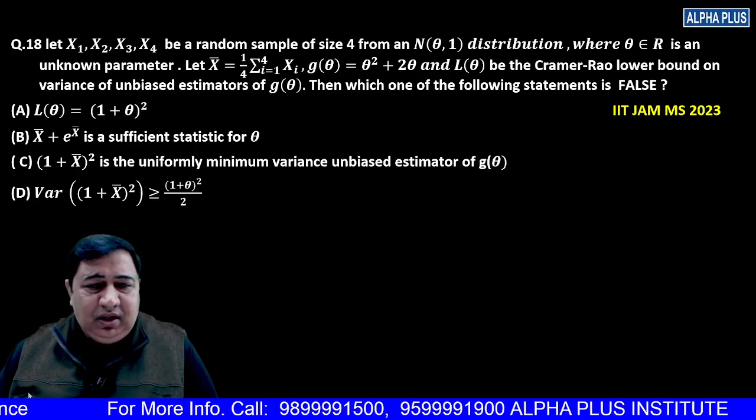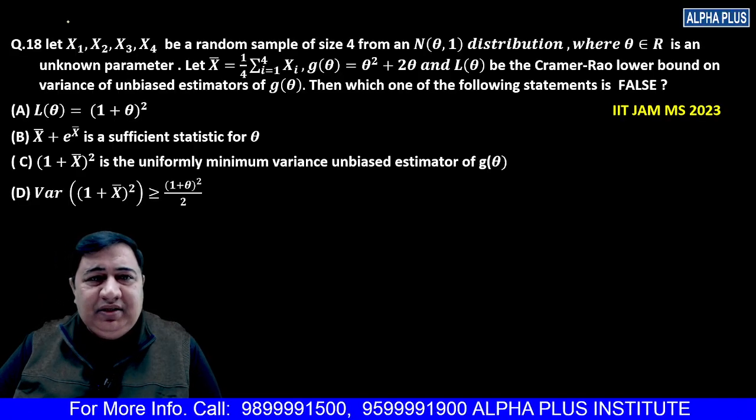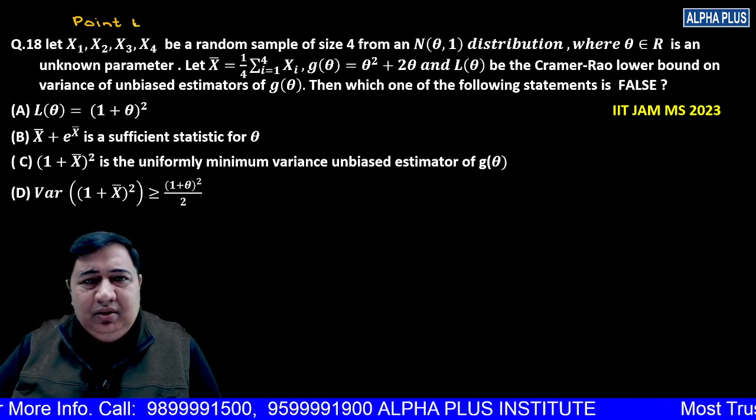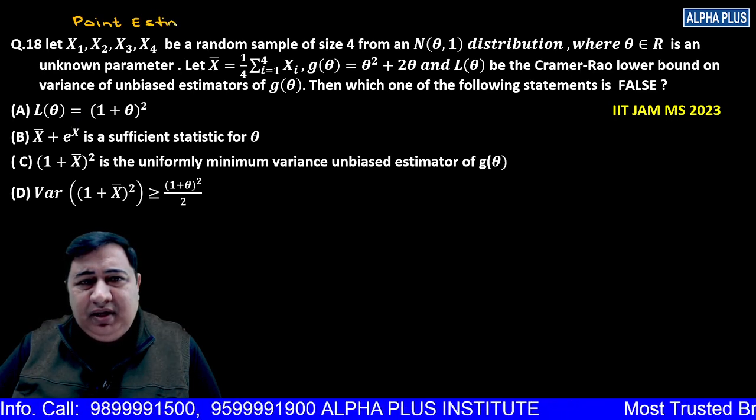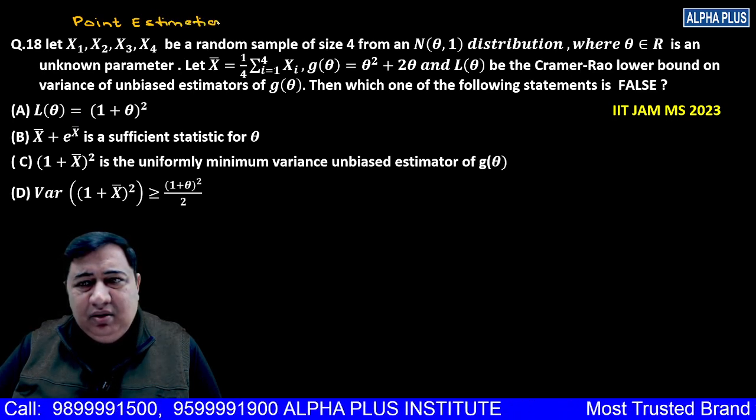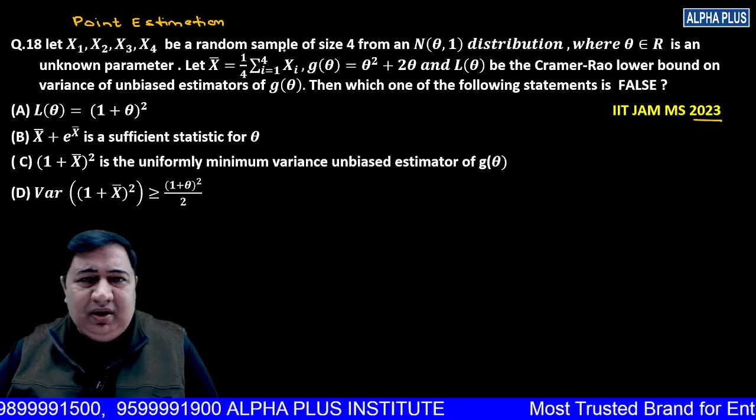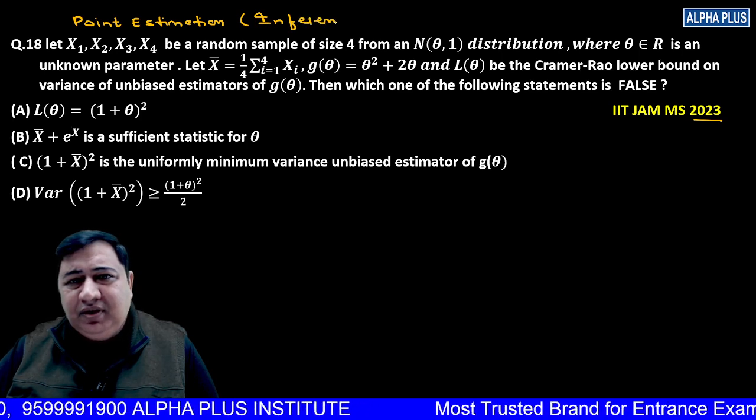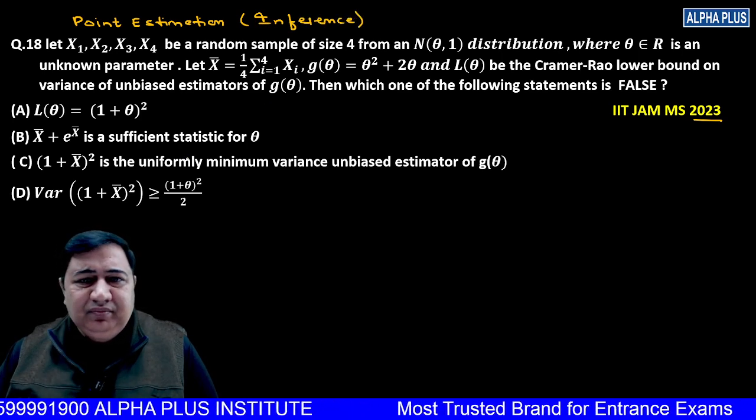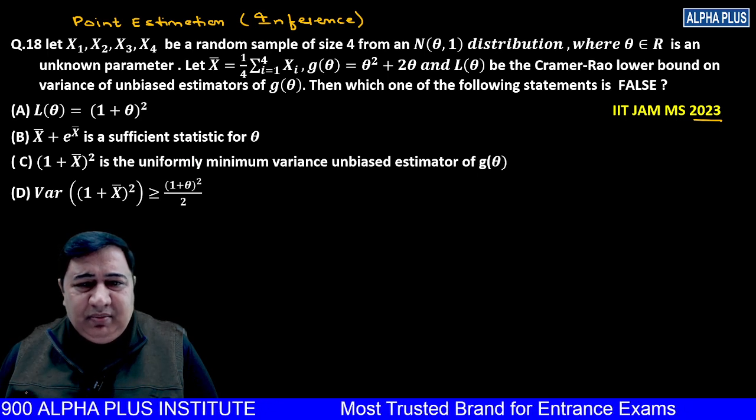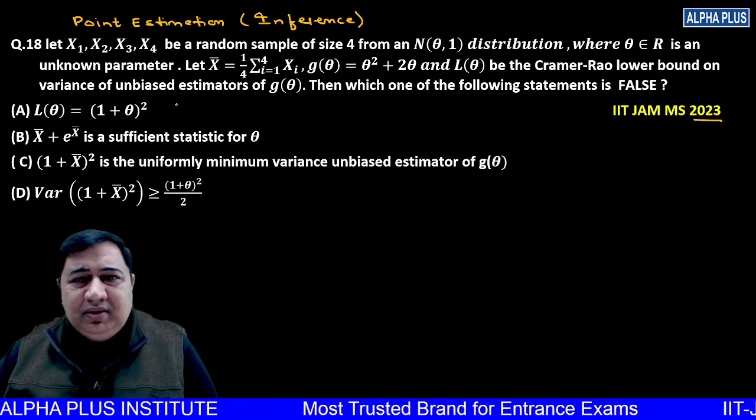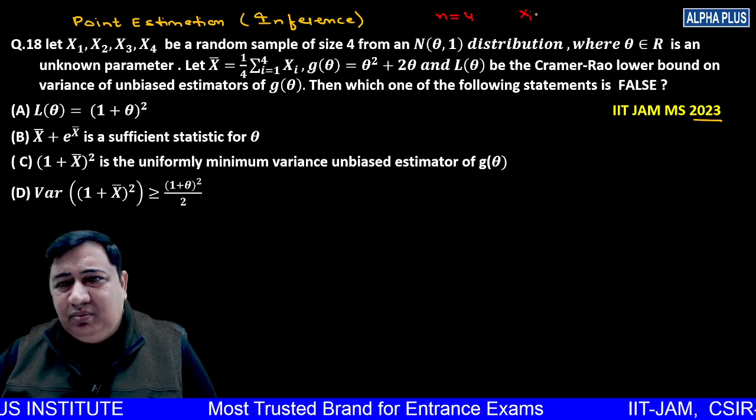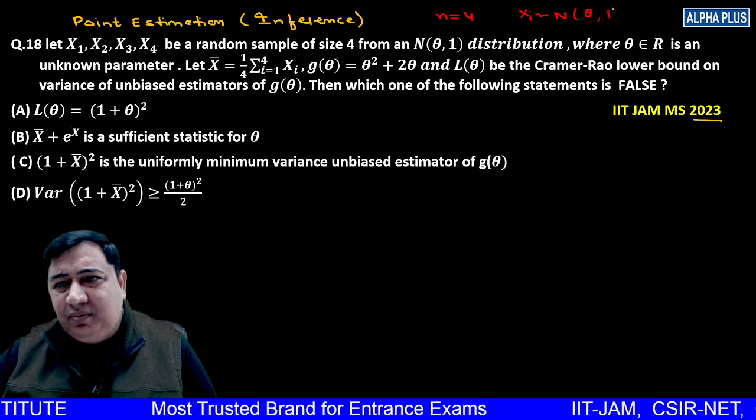So students, this is a question of point estimation. Question number 18. This is a question about parameter estimation which comes under the topic of inference. Let's look at the problem. Sample size n=4, X follows normal distribution with mean theta and variance one.